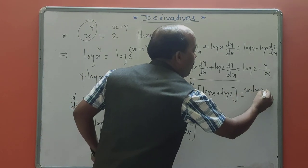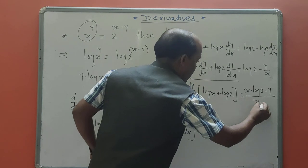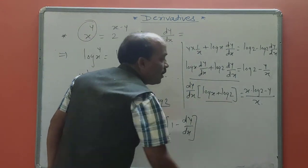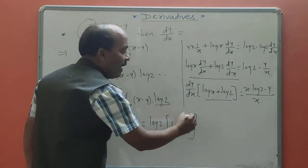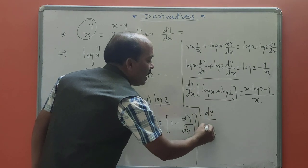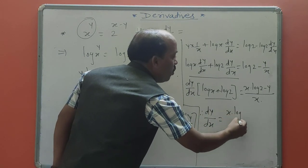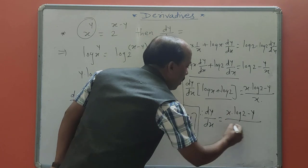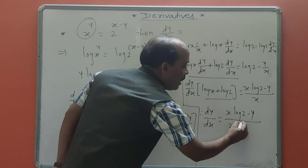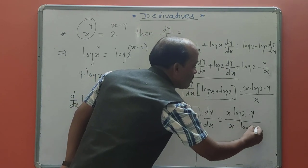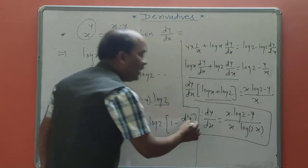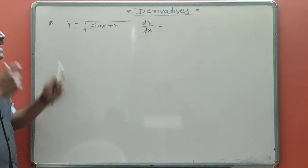The RHS simplification is (x·log 2 minus y) / x. Applying the product law and transferring the bracket, dy/dx equals (x·log 2 minus y) / x, divided by (log x + log 2), which equals log 2x. Transferring the multiplication gives division, so dy/dx = (x·log 2 minus y) / (x·log 2x). This is the value of dy/dx for the first example.